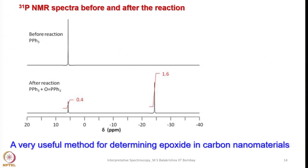You can see the 31P spectra before and after the reaction. Before the reaction, the full quantity of PPh3 is present. After the reaction, PPh3 is partially converted to triphenylphosphine oxide depending on how many epoxide groups were present on the nanomaterial. For example, if only 0.4% of PPh3 remains in solution, then 1.6 equivalents were converted to triphenylphosphine oxide — directly quantifying the epoxide loading. This is a very important and simple method for determining epoxides present on nanomaterials. Let me stop here and continue with more interesting examples in my next lecture. Until then, have an excellent time reading spectroscopy — thank you.